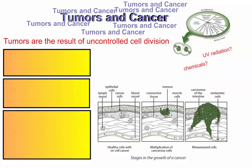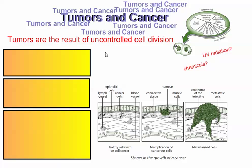We won't go into that much depth here for the IB syllabus, but just to understand that tumors result when you have uncontrolled cell division — in other words, when cells start to divide and they don't know when to stop dividing.